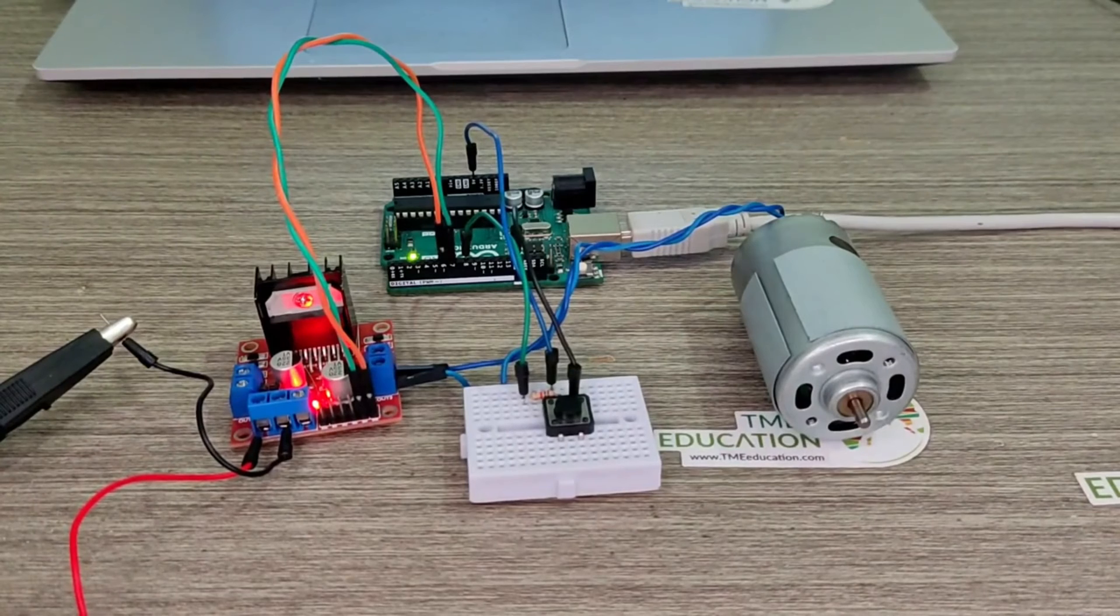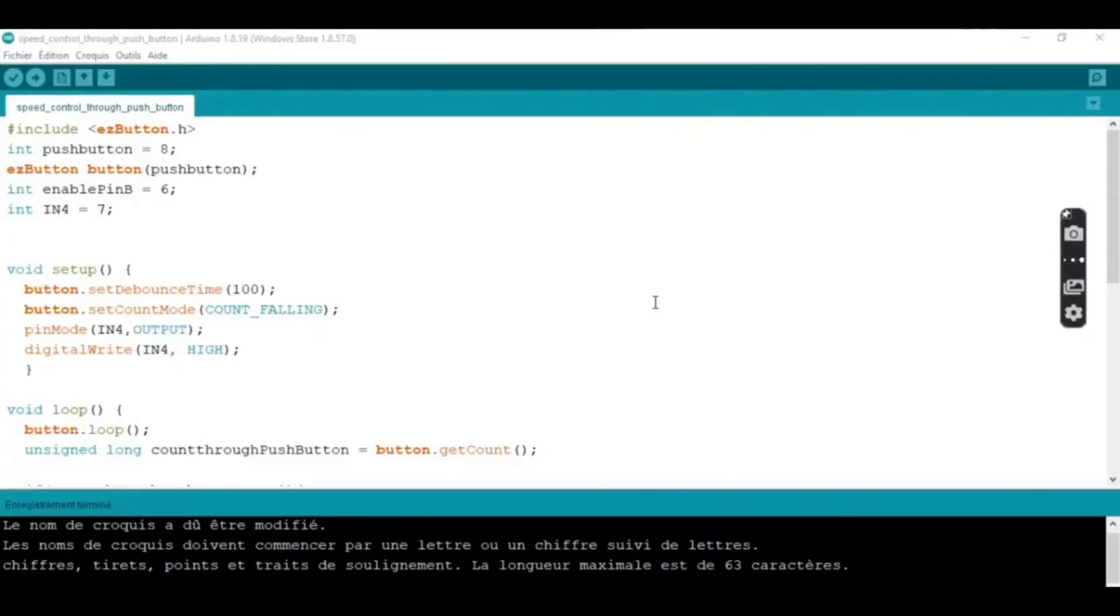Okay, but first I'm going to explain the program. We are at this stage. That's the library. The push button is pin 8. We are creating an object attached to pin 8. The enable pin B is pin 6. The input 4 is pin 7. So input 4 is an output and we set it to high in void setup. We call the function button.